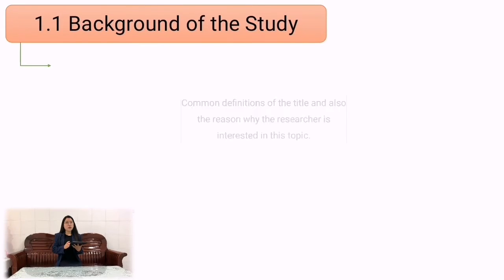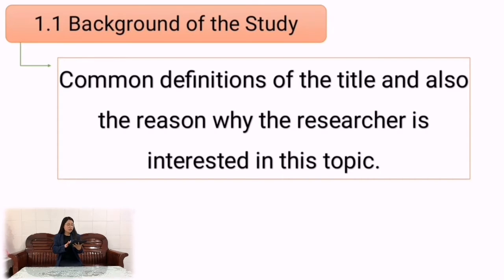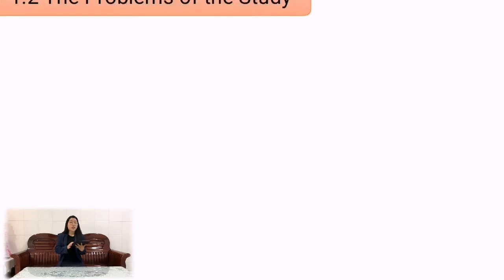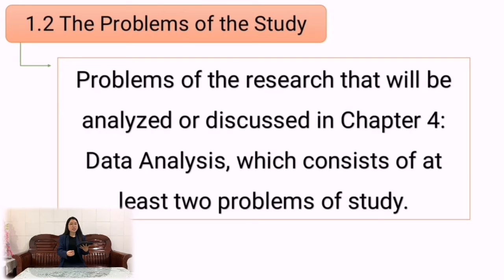In 1.1, background of the study, it consists of common definitions of the title and also the reason why the researcher is writing about this topic. In 1.2, the problems of the study, it is about the problems of the research that will be analyzed and discussed in chapter 4.